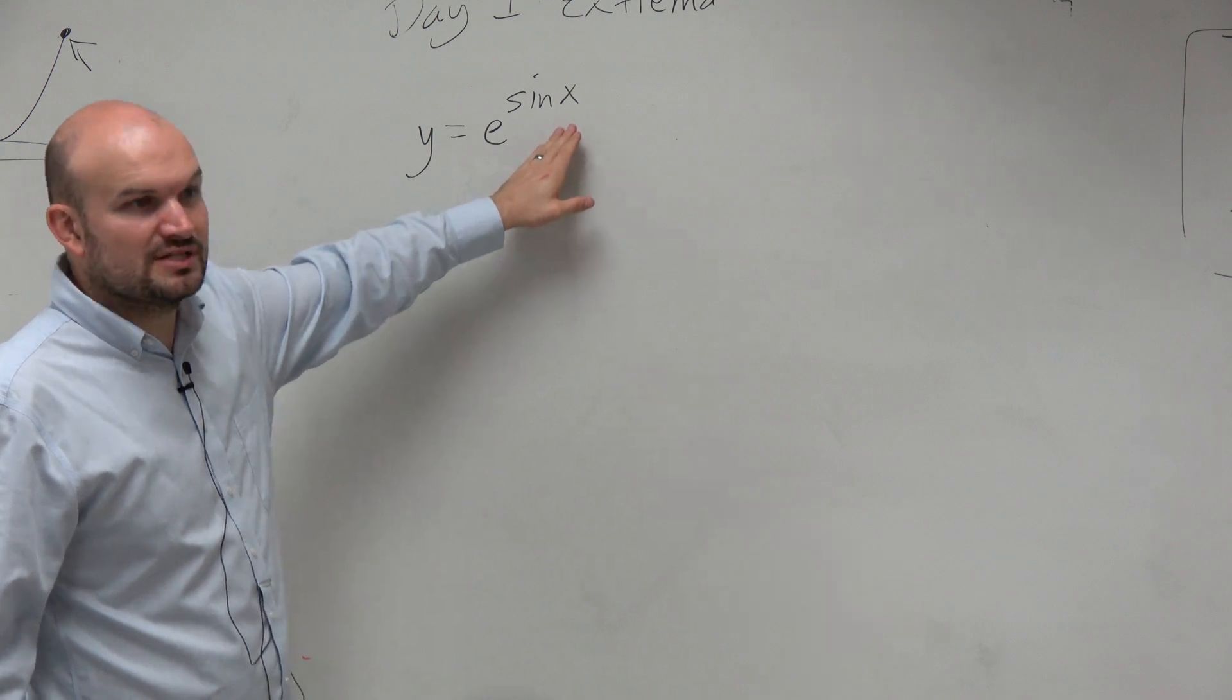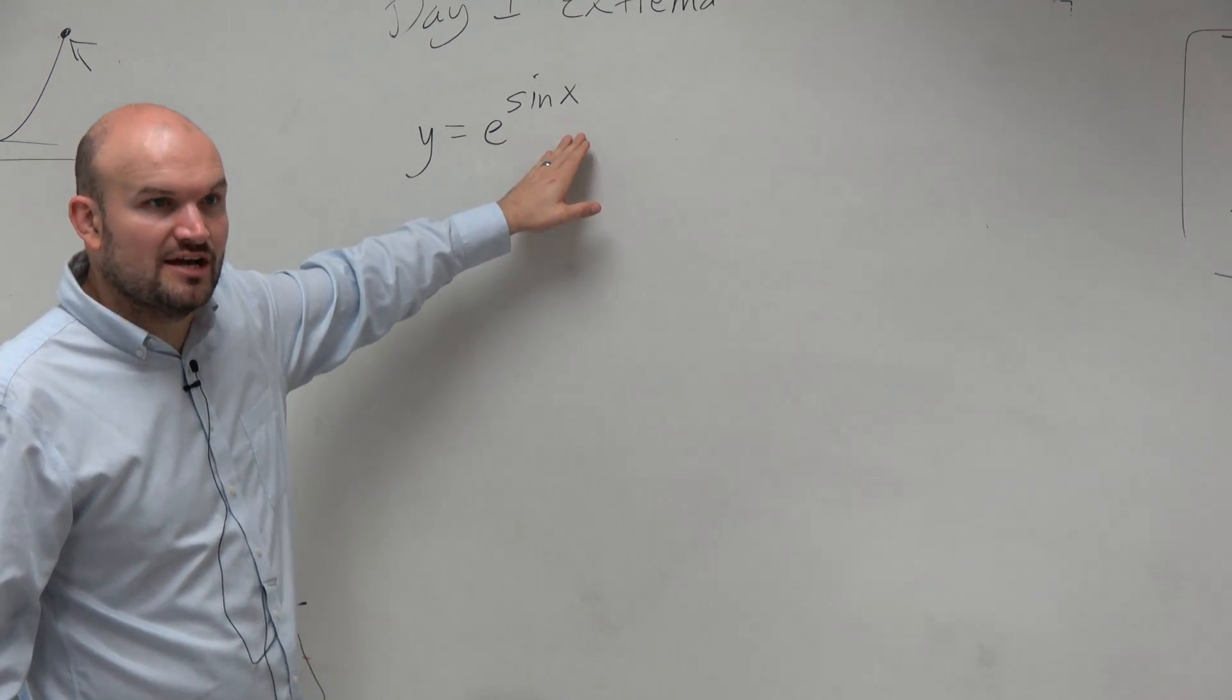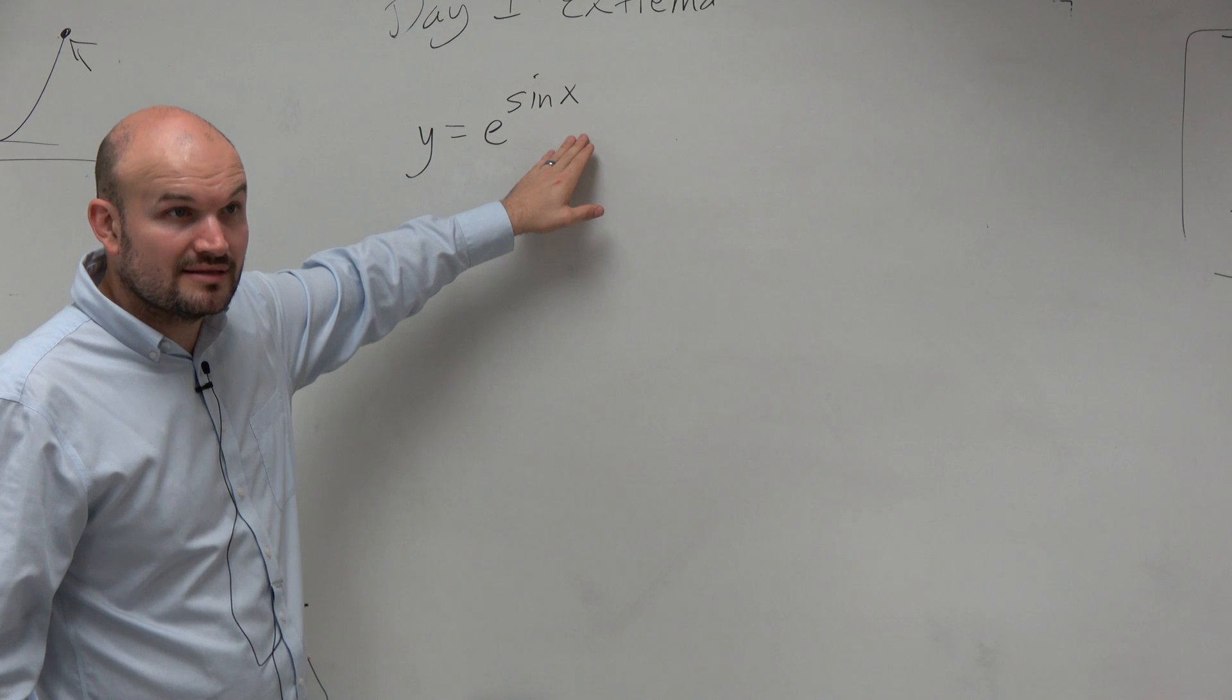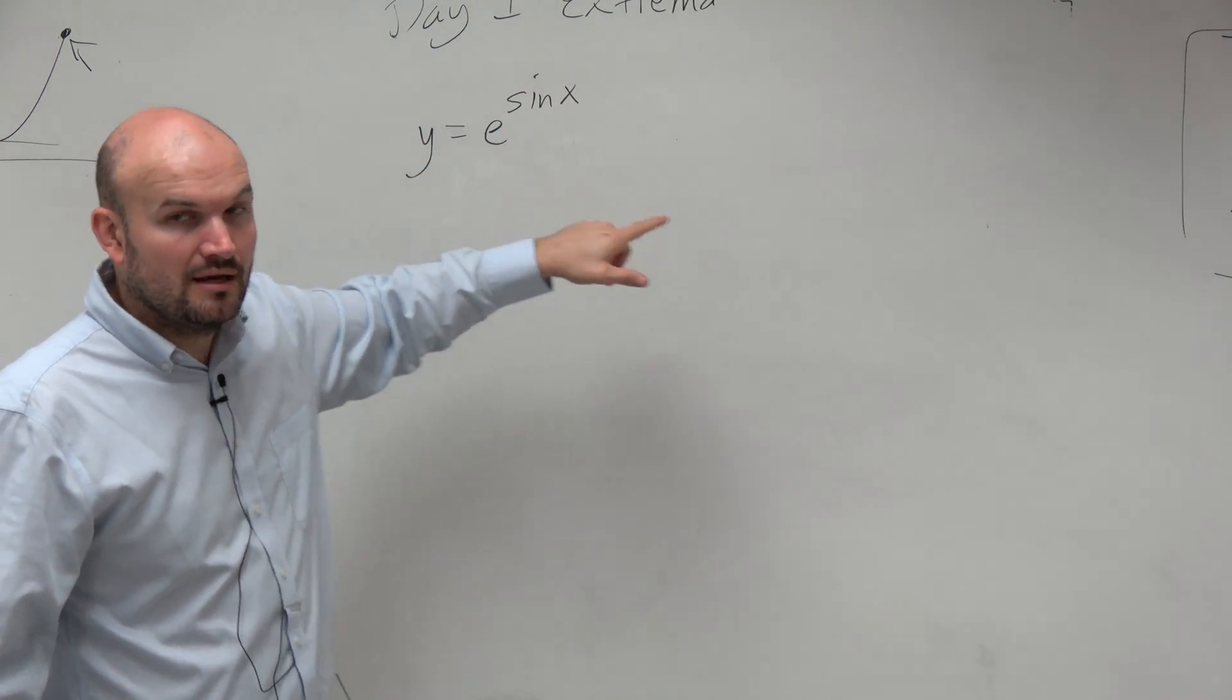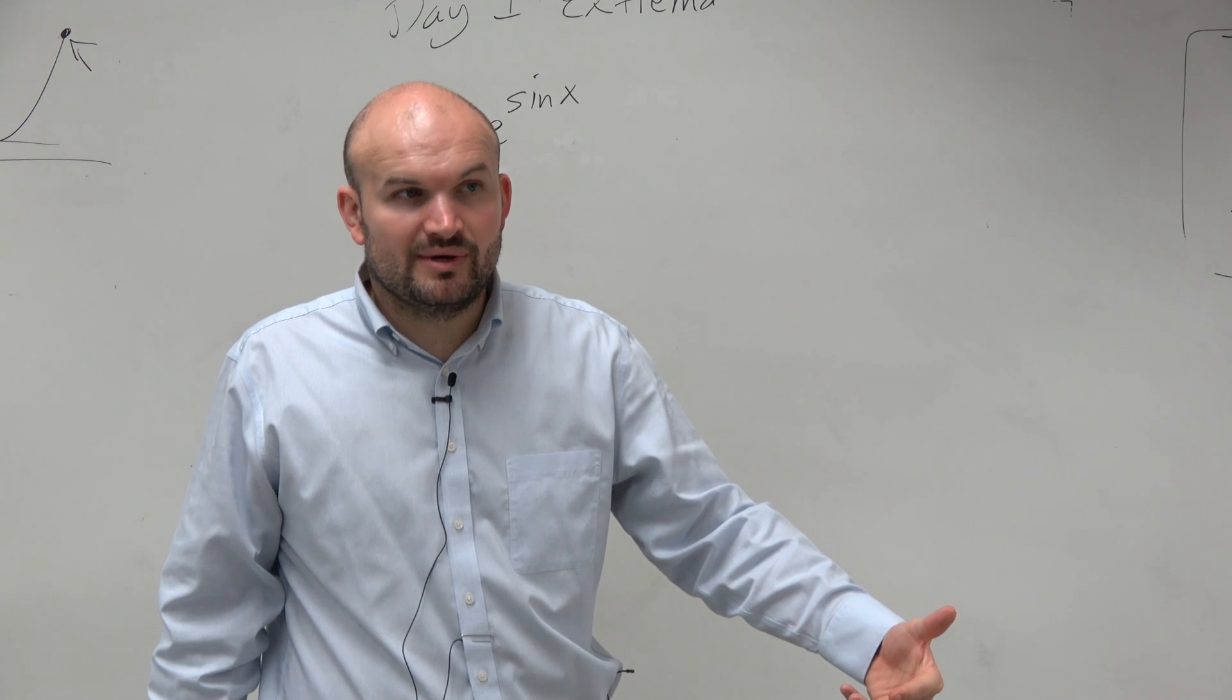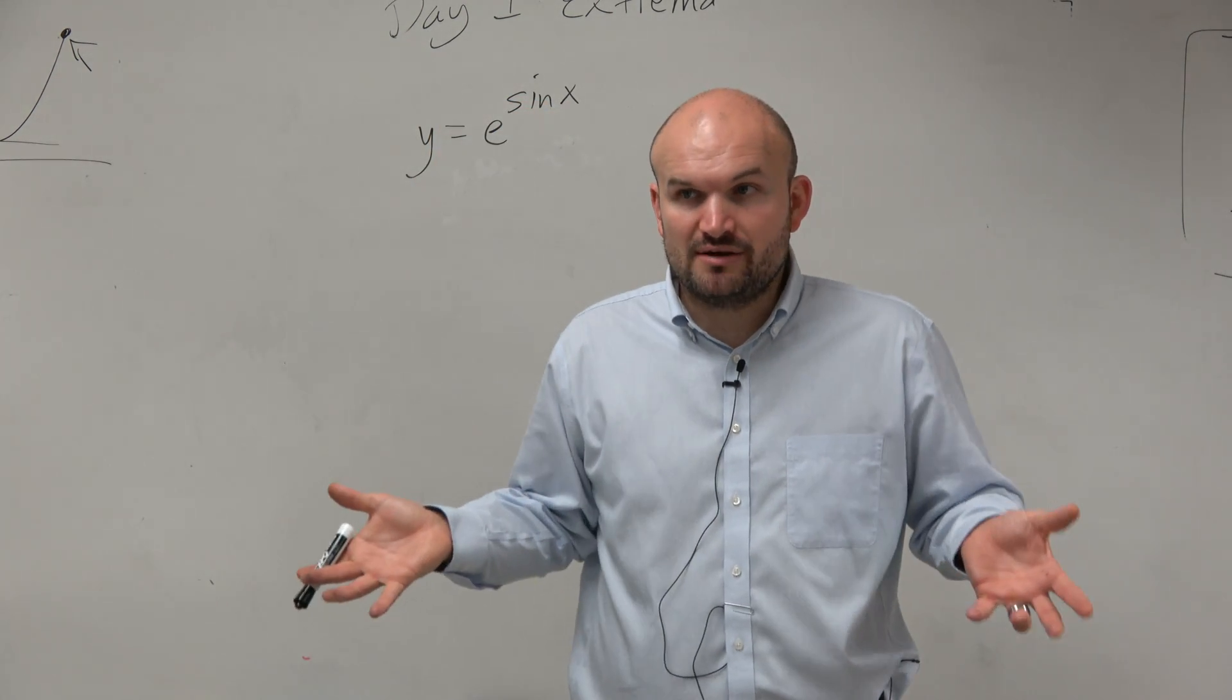So it doesn't really make sense for us to have any discontinuities or values we can't plug in for x. That makes sense. Sine is continuous for all x, and e to the x is continuous for all x. However, the issue is the EVT only applies when we have a closed interval.